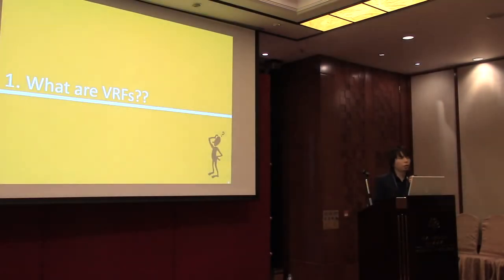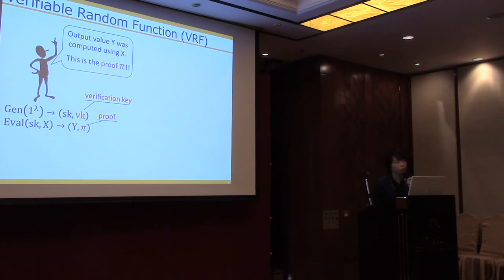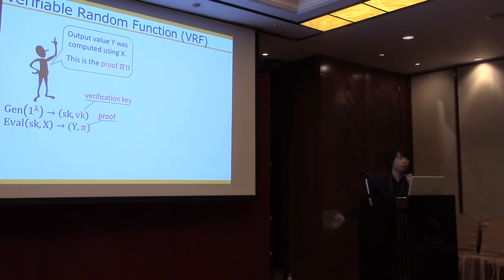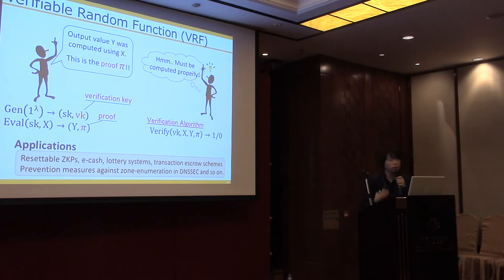First of all, what are VRFs? VRFs are short for verifiable random function, introduced by Micali, Rabin, and Vadhan. A VRF allows you to prove that you computed the output value y in a correct manner. When somebody says they output value y using input x, it allows you to attest this by producing a proof pi. The evaluation algorithm on input x outputs y and a proof pi. Using a verification key output by the generation algorithm, anybody can publicly check that the proof is correct and that y was computed using x.